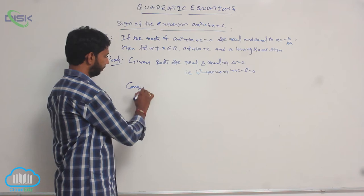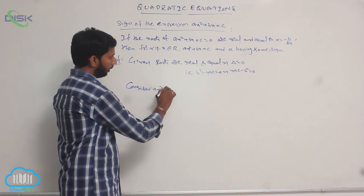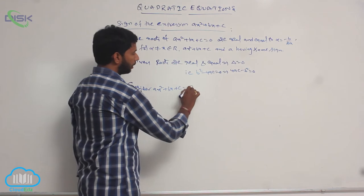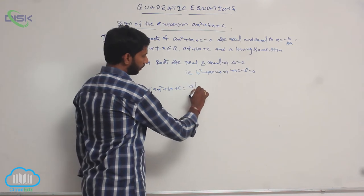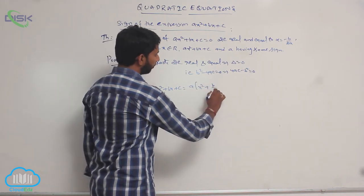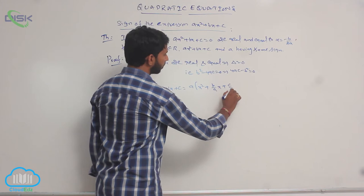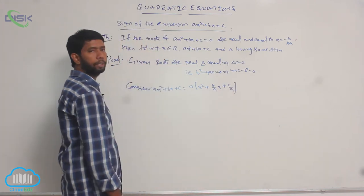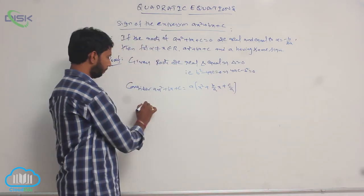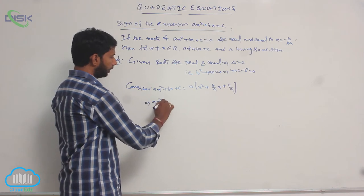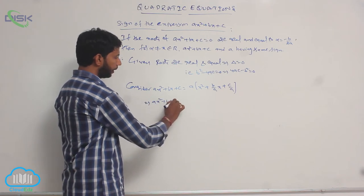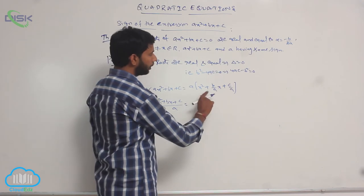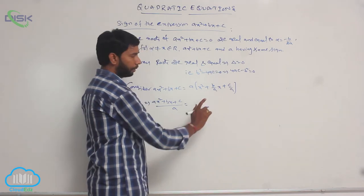Consider ax² + bx + c. Taking 'a' as common, we get a times (x² + (b/a)x + c/a). Therefore, ax² + bx + c divided by a is equal to x² + (b/a)x + c/a. The right side term will be converted into a perfect square.